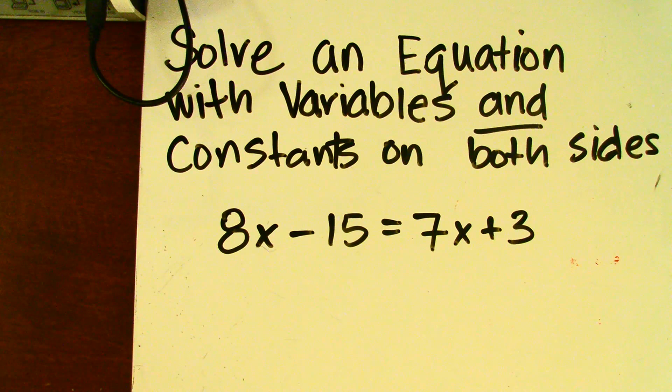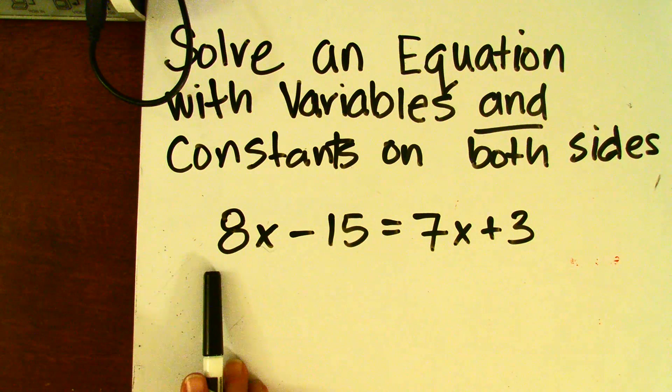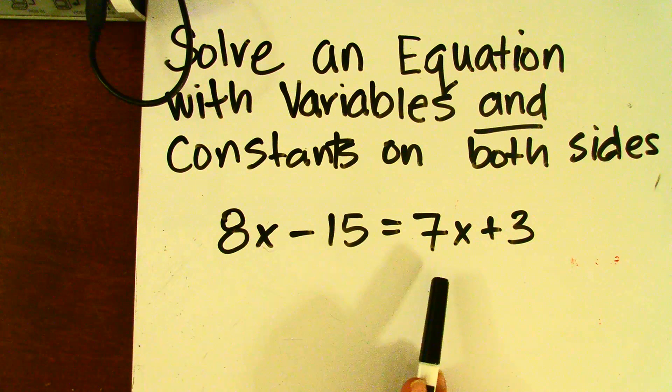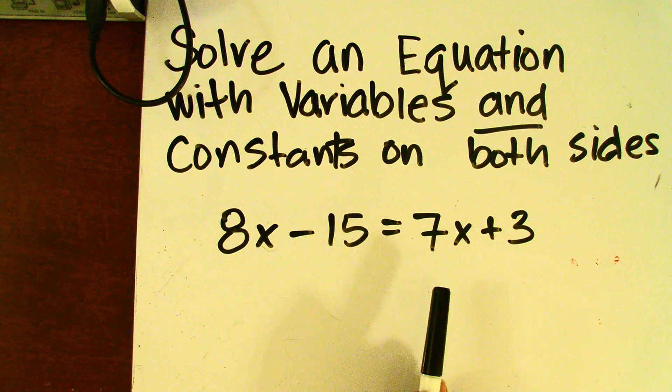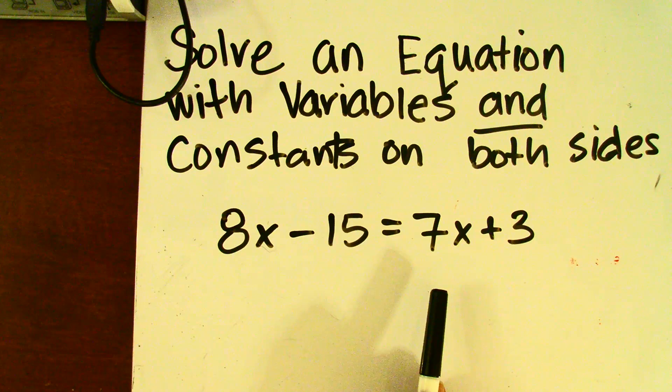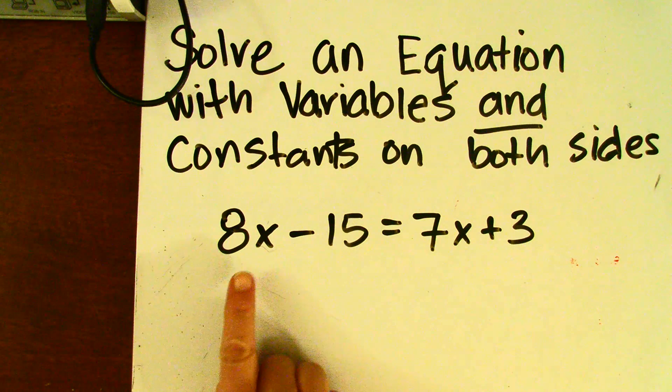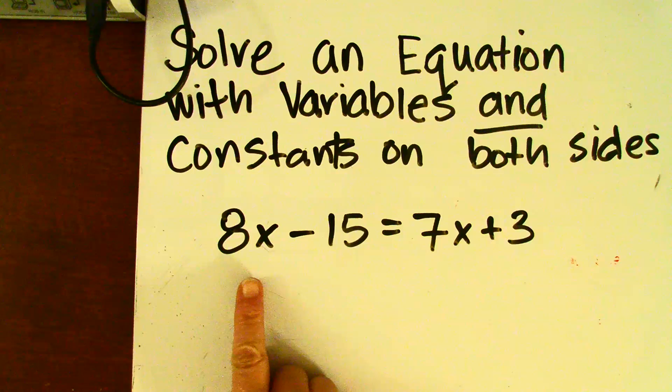Now, if I move the variable 8x over to the right side, I'm going to be subtracting, and then that will mean that I'll have negative 15 and then a negative x plus 3. Now, one thing to consider is that if you can avoid having a negative coefficient with your variable, I'll do so because then you'll have to divide out that negative. So instead of moving this 8x to the other side, let's move the 7x to the left side.